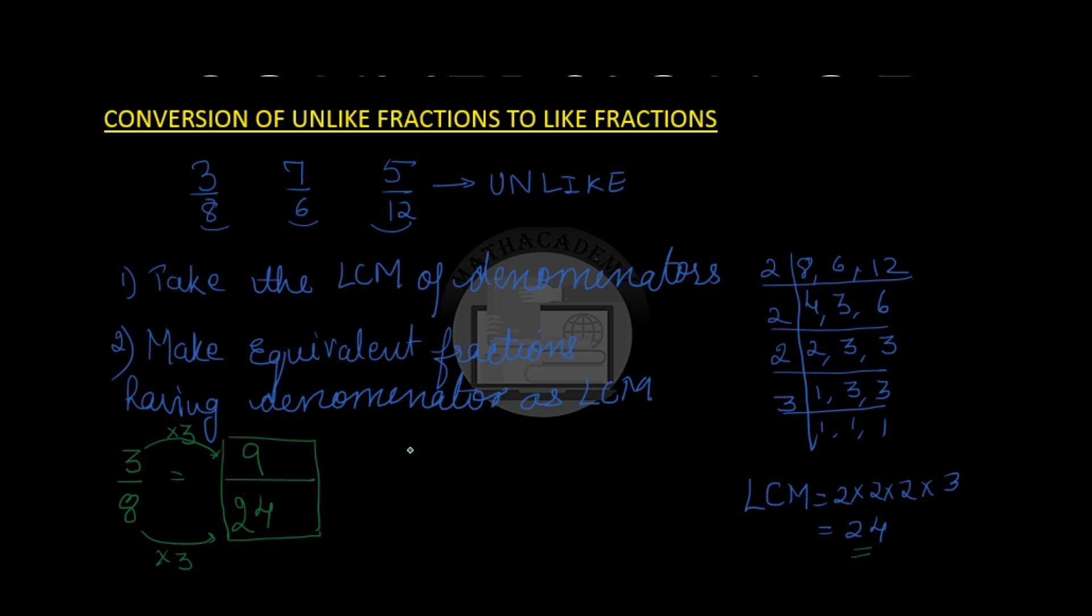Our next fraction is 7 over 6. To get the denominator of 24 we are multiplying 6 by 4, so we will do the same operation in the numerator and we get 28 as the numerator. So 28 over 24. And our third fraction is 5 over 12. So we are multiplying the denominator by 2, same in the numerator, and we get 10 over 24.